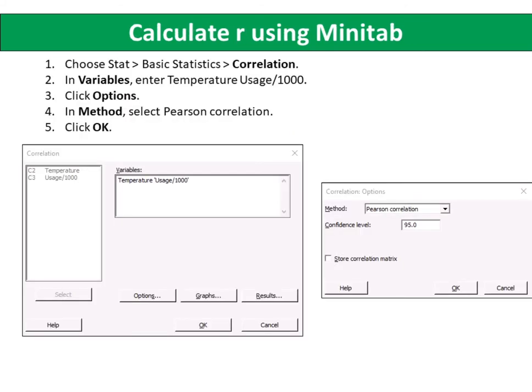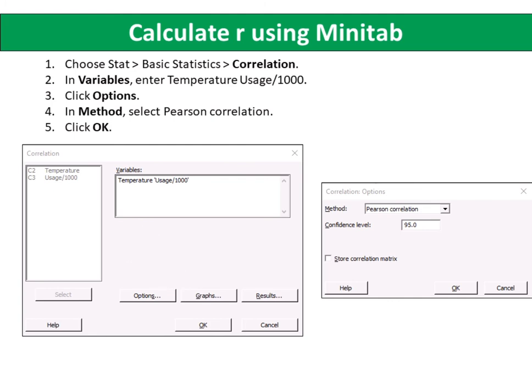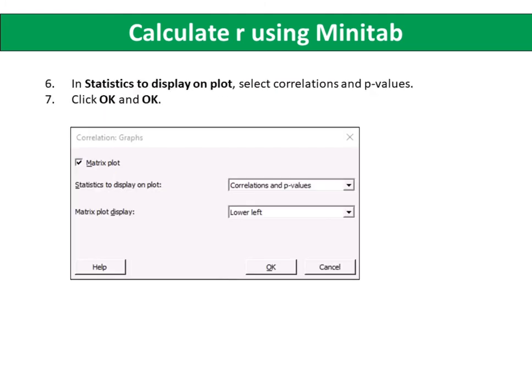Next, we will determine the Pearson's correlation coefficient using Minitab. Choose Stat, Basic Statistics, Correlation. In variables, enter temperature and usage per 1000. Click Options. In Method, select Pearson Correlation. Click OK. In Statistics to Display on Plot, select Correlations and P-Values. Click OK and OK.